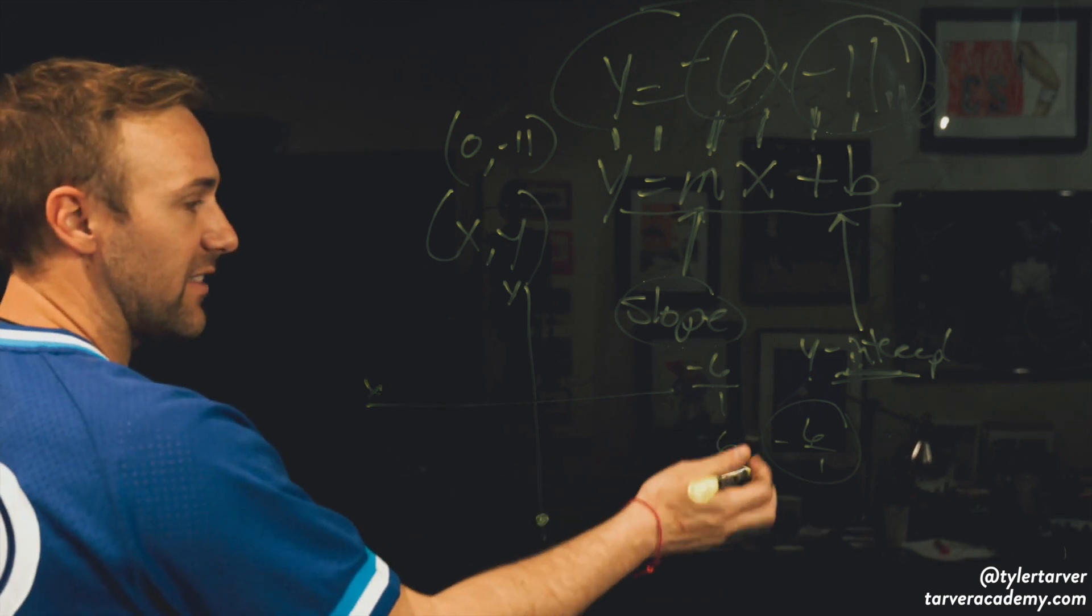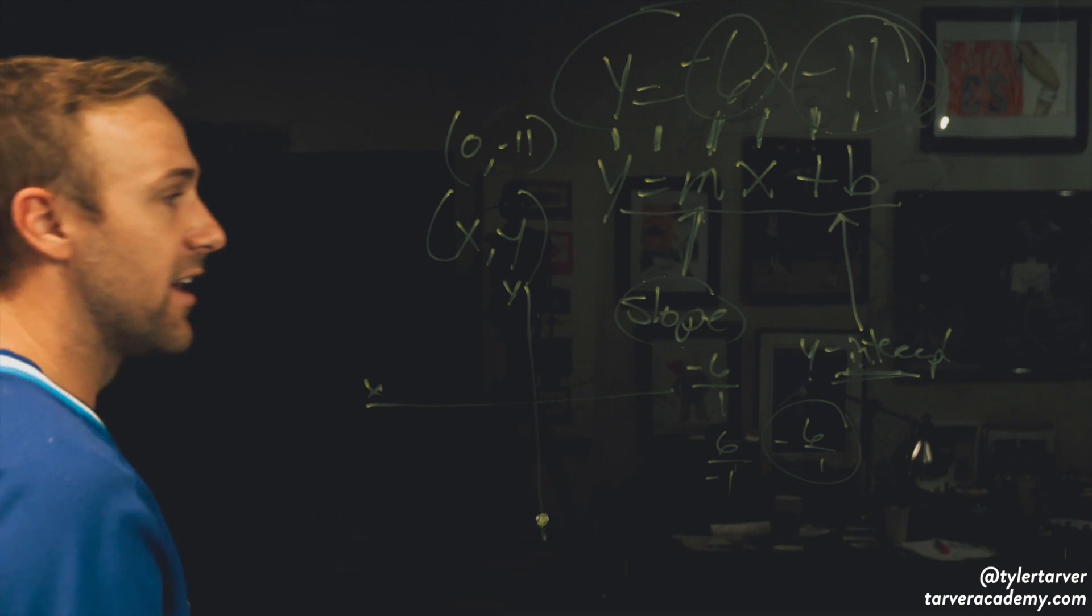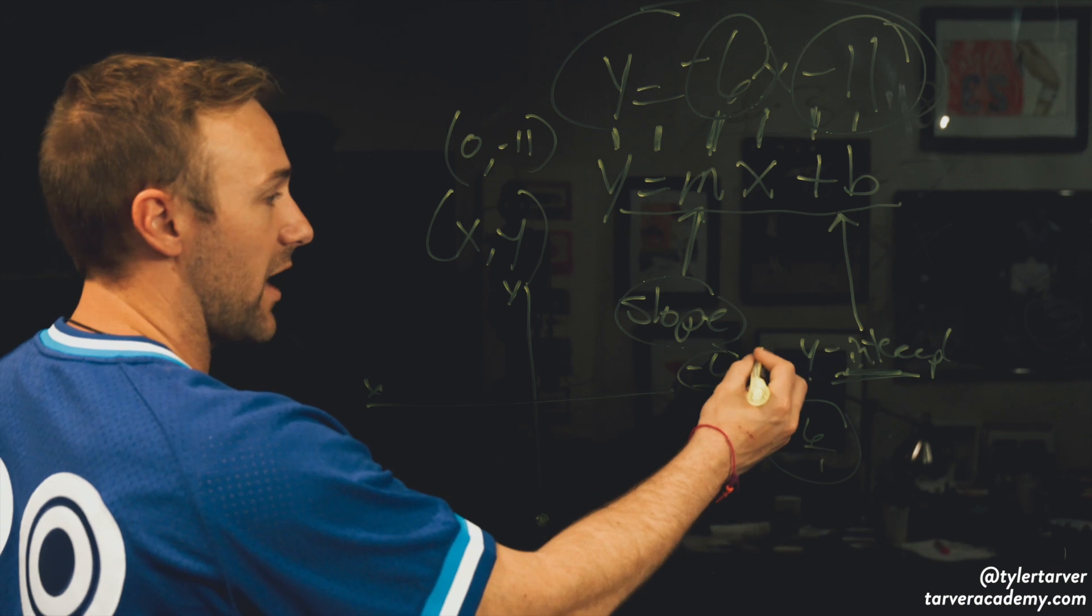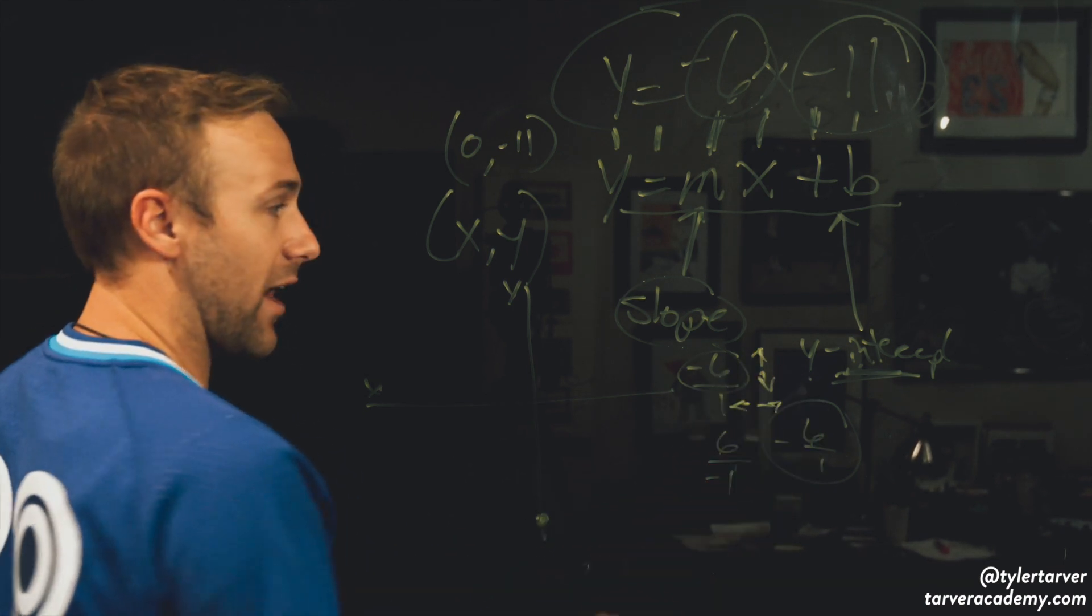So from that y-intercept, I want to take this, and I want to build the line from here. So from this line, I know that I can go down 6 over 1. So the top number is your up and down, and your bottom number is your left and right.